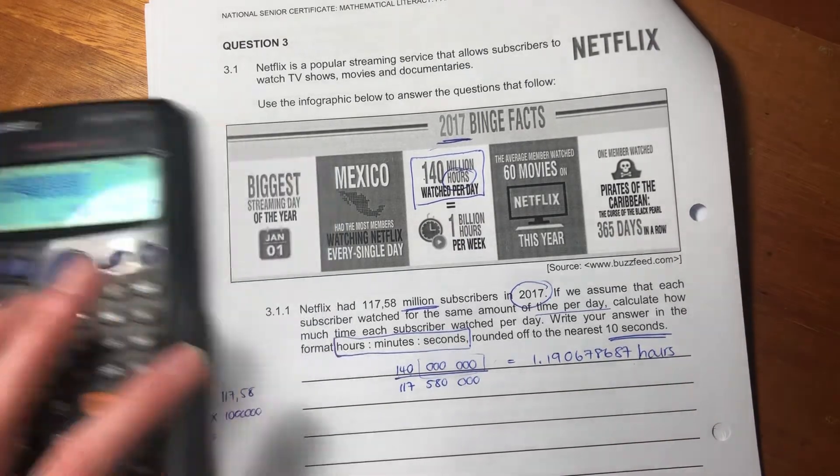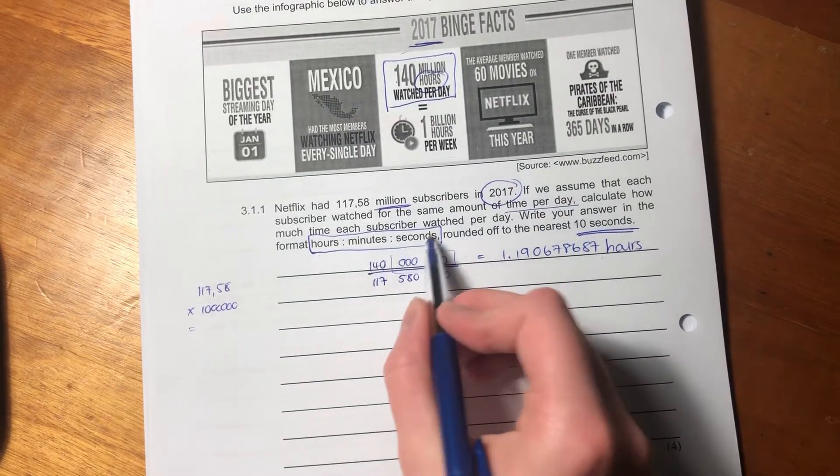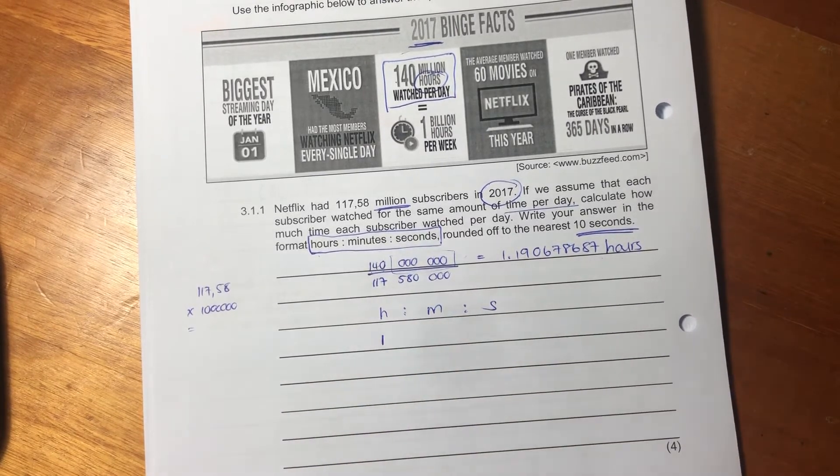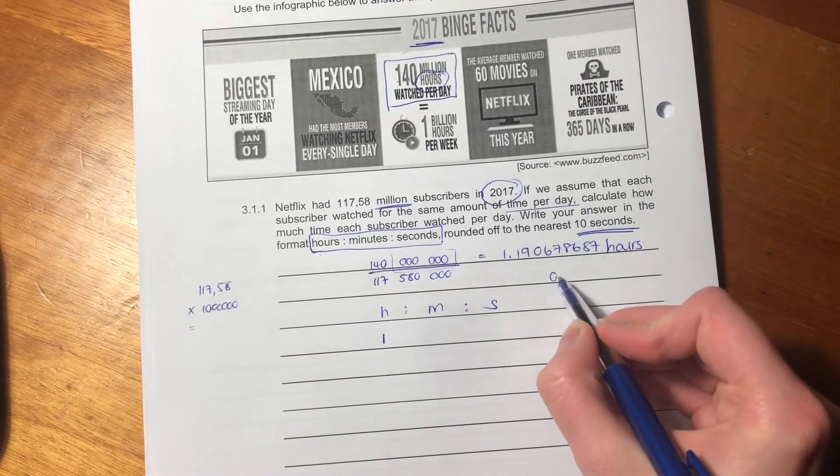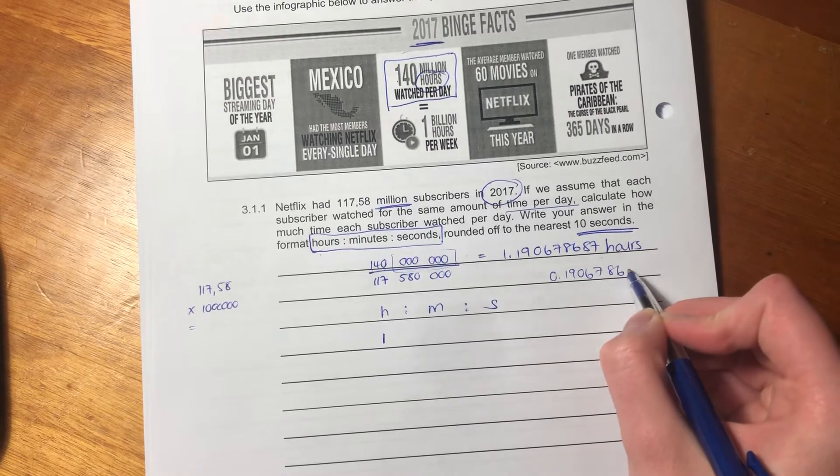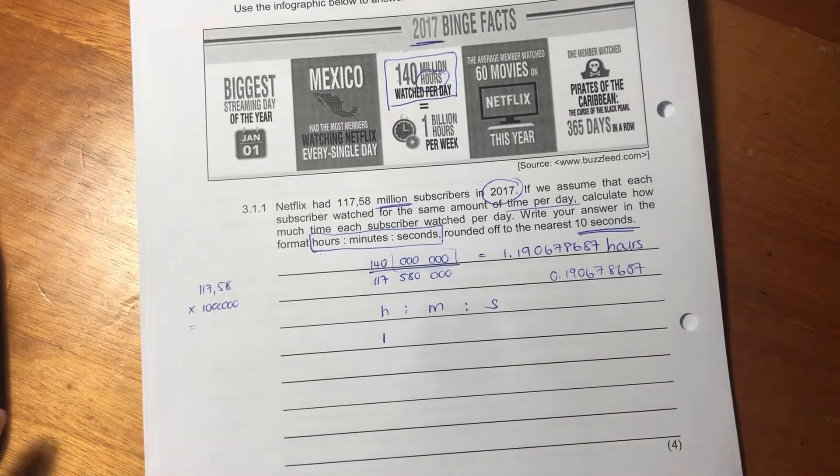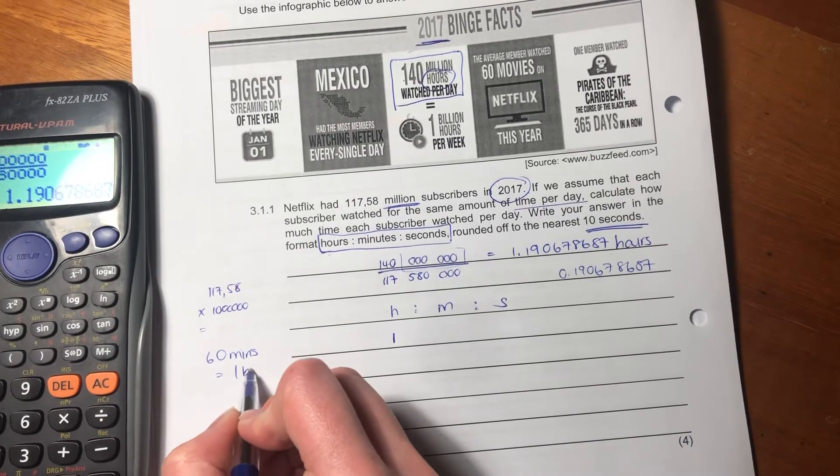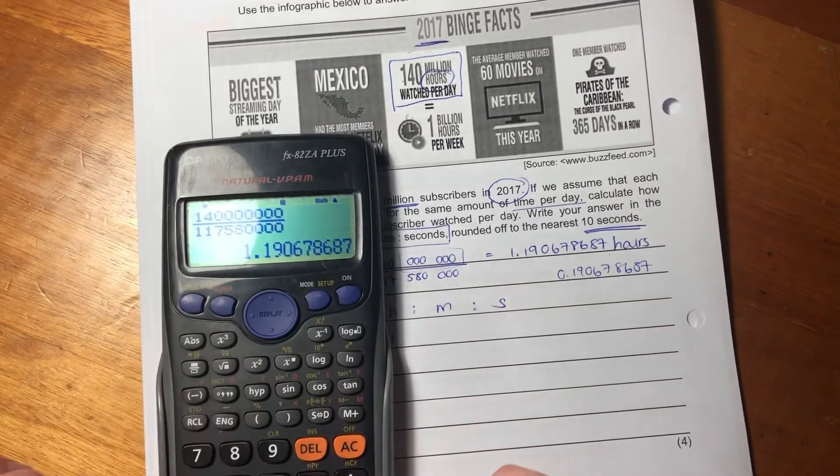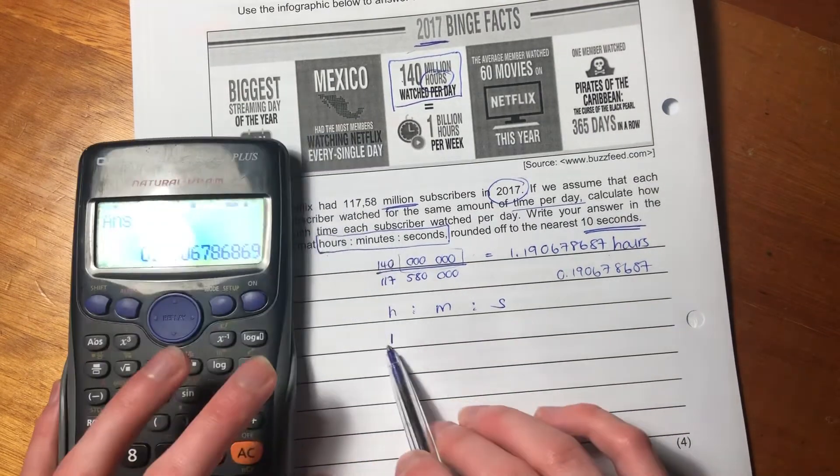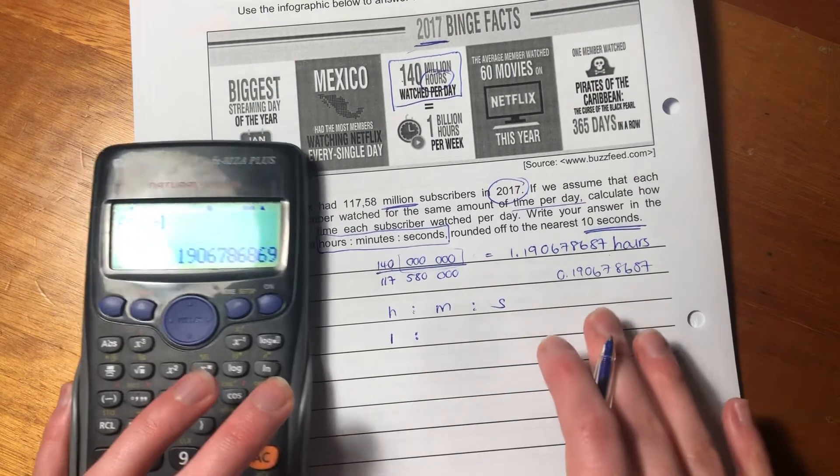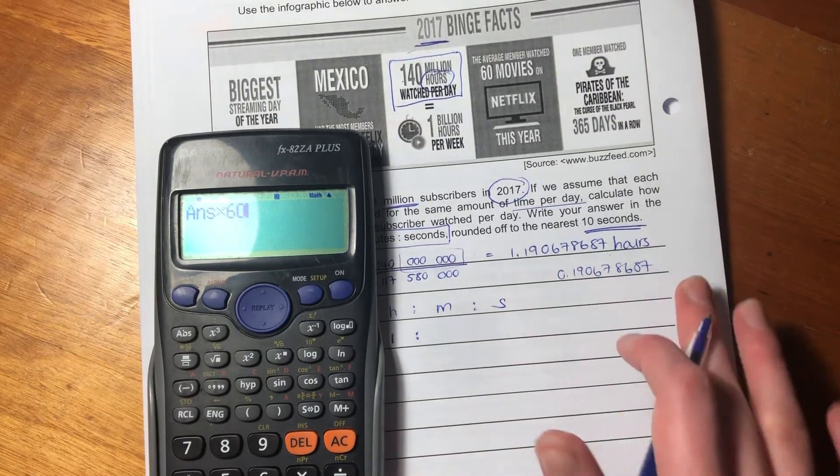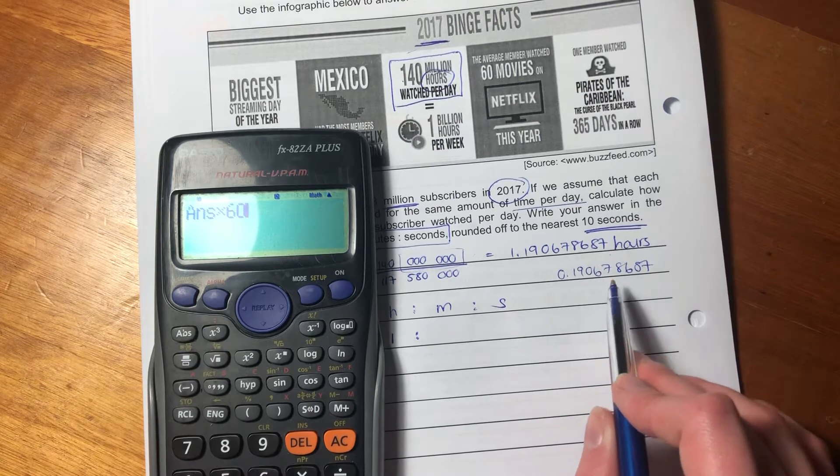But we haven't finished answering our question, because our question says that we have to write it in hours to minutes to seconds. So we know hours, minutes, seconds. We know that it's one hour. But now we need to figure out what 0.190678687 is in minutes. So how many minutes are there in an hour? There are 60 minutes in one hour. So I'm going to take this here, and I'm going to times it. So I'm going to just minus one first to get this, because we put that one hour over here. We're not interested by hours anymore, just working with minutes and seconds. And we're going to times this by 60.